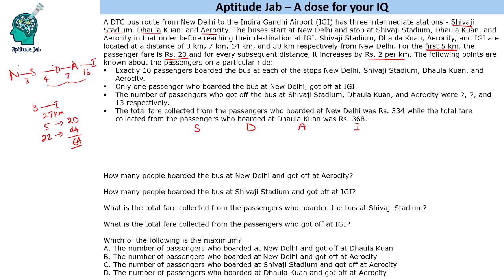At Shivaji Stadium we have only those people who boarded at New Delhi. For Dholakunha, we will have people who boarded at New Delhi as well as Shivaji Stadium. For Aero City, we will have New Delhi, Shivaji Stadium, and Dholakunha. It is given that only one passenger who boarded at New Delhi got off at IGI. The number of passengers who got off at Shivaji Stadium, Dholakunha, and Aero City were 2, 7, and 13 respectively.